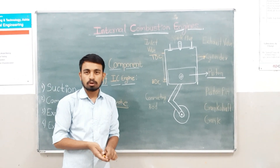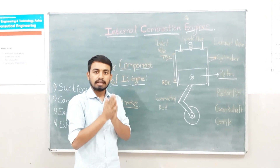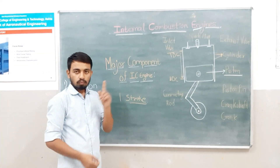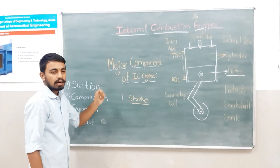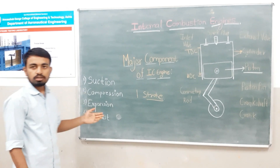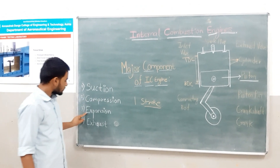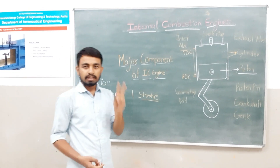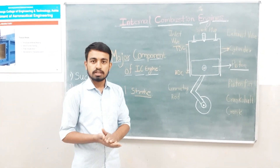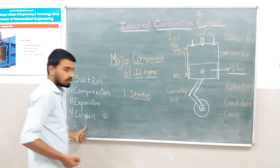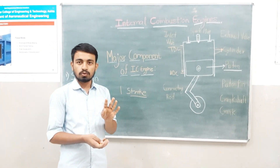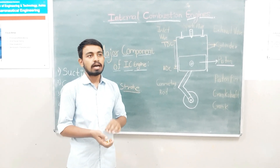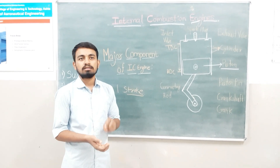Based on strokes, engines are classified into two categories. For one complete cycle of the internal combustion engine, there are four processes: suction, compression, expansion, and exhaust. When the engine completes all four processes in two strokes, it is known as a two-stroke engine. When it completes them in four strokes, it is a four-stroke engine. Two-stroke engines are used in motorcycles and four-stroke engines are used in heavy vehicles such as trucks and cars.